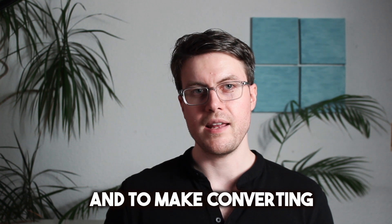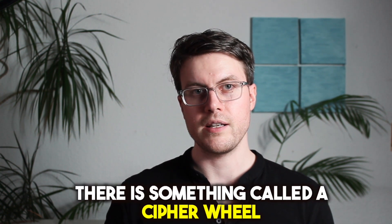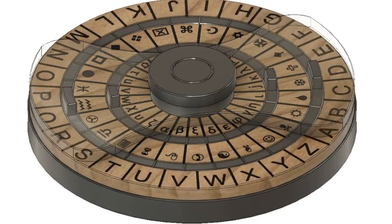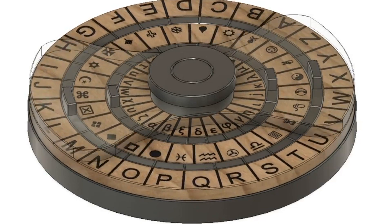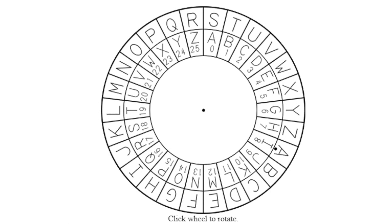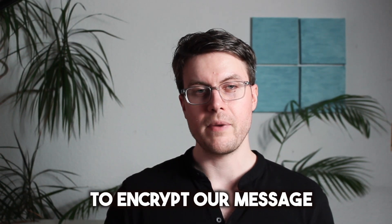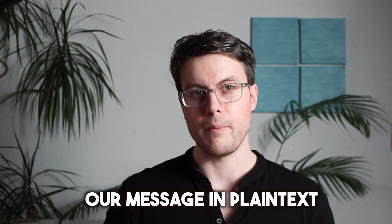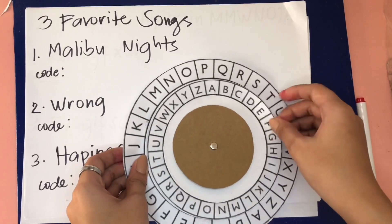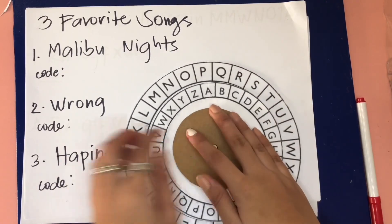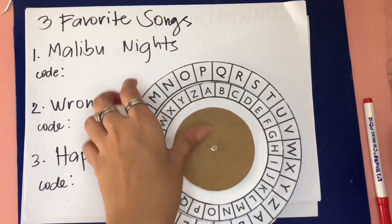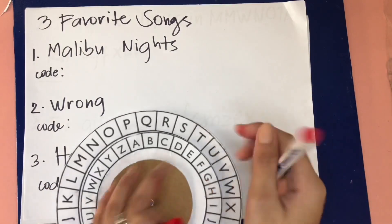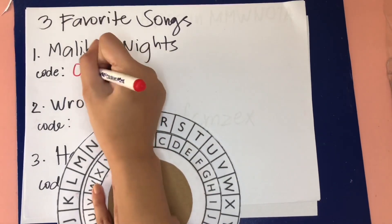And to make converting plain text to ciphertext easier, there's something called a cipher wheel. The cipher wheel consists of two rings of letters. Each ring is split up into 26 slots for each letter in the alphabet. And the outer ring represents the plain text alphabet and the inner ring represents the corresponding letters in the ciphertext. So to use the cipher wheel to encrypt our message, we would first write down our message in plain text. Next, we would spin the inner wheel of the cipher wheel until its slot matches up with the slots in the outer wheel.